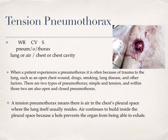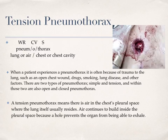The first medical condition is a tension pneumothorax. There's a word root, a combining vowel, and a suffix, which means that there is air in the chest cavity. When a patient experiences a pneumothorax, it is often because of trauma to the lungs, such as an open chest wound, drugs, smoking, lung disease, or other factors. There are two types of pneumothorax, simple and tension, and within those two are also open and closed pneumothorax. A tension pneumothorax means there is air in the chest pleural space where the lung itself usually resides. Air continues to build inside the pleural space because a hole is preventing the organ from being able to exhale.